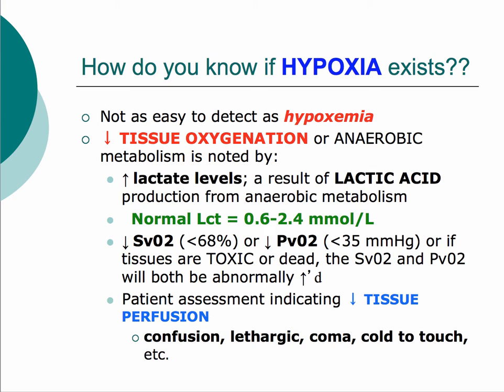How do we know if someone's hypoxic? As Noel mentions, it isn't as easy to detect as hypoxemia. We can infer hypoxemia from oxygen saturations or draw an arterial blood gas, but it's much harder to detect hypoxia. We really need some demonstration of inadequate tissue oxygenation — decreased tissue oxygenation or anaerobic metabolism.